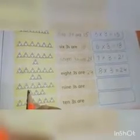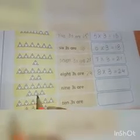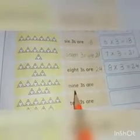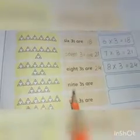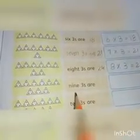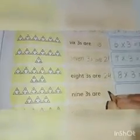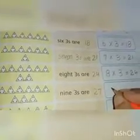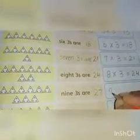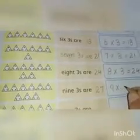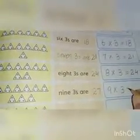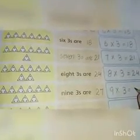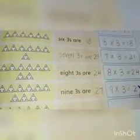Here we have nine triangles and each triangle has three dots. Nine triangles and the size is three. Three nines are 27. Write 27 in the box. First of all, we write the number of triangles — nine — the special sign of multiplication, and the size is three. 9 × 3 = 27. Three nines are 27. Write 27 in the box.